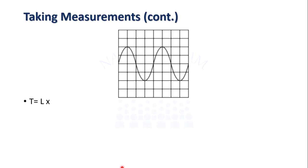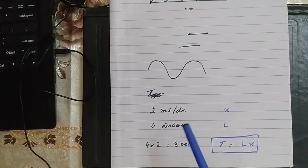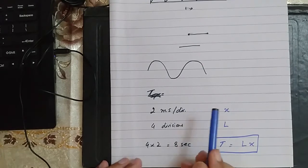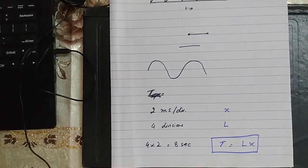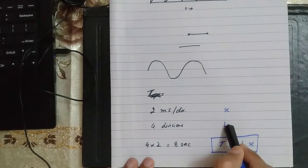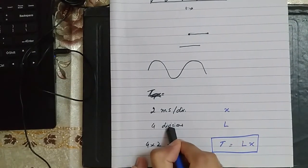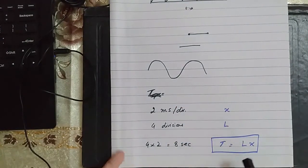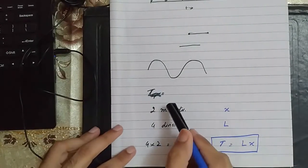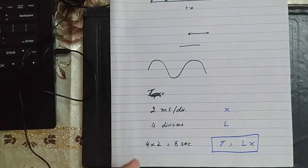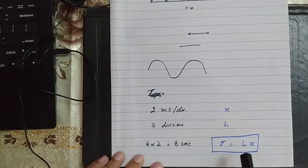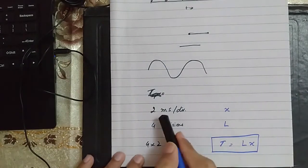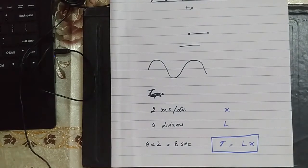There are some important points about units. In exams, you may be given the time-based setting in milliseconds per centimeter instead of milliseconds per division. In that case, take the length in centimeters instead of divisions so that the equation remains homogeneous. Also pay attention to prefixes: if it is milliseconds per division, the time period must also be in milliseconds. If it is in microseconds, the time period must be in microseconds. Pay special attention to units.